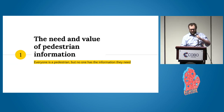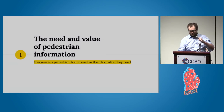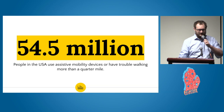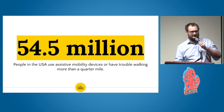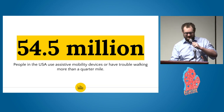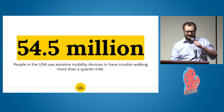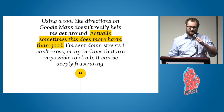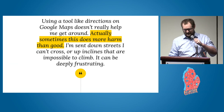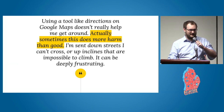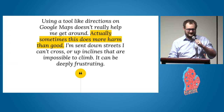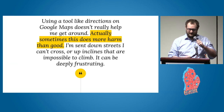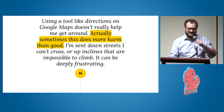A common statistic we cite is that 54.5 million people in the United States can be categorized as either using an assistive mobility device or otherwise having trouble walking a quarter mile. A typical response from a map user with some mobility requirement is: using a tool like directions on Google Maps doesn't really help me get around — sometimes it does more harm than good. You can be sent down streets you can't cross or up inclines impossible to climb.